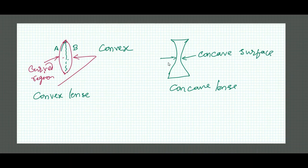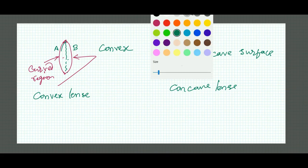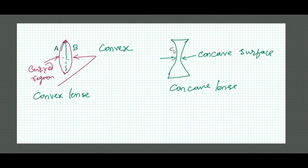This one is also a concave surface and we can name this as C and D. This surface is C and this surface is D. Now we have to know something more about these lenses.